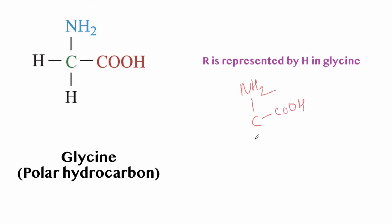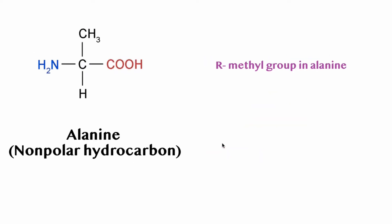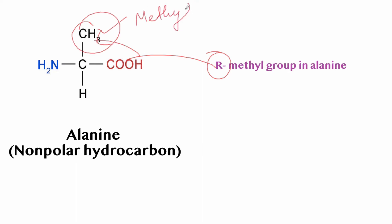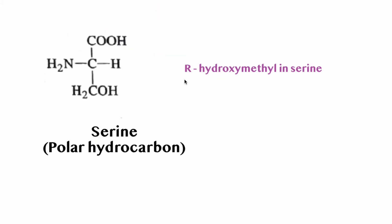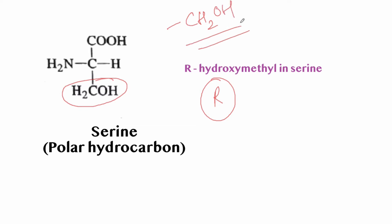Looking at specific examples: glycine is the simplest amino acid where the R group is replaced with H. In alanine, R is replaced with a methyl group (CH3). Serine has a hydroxymethyl group (CH2OH) in the R position.